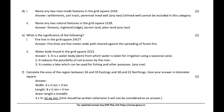What is the significance of the water body found in the grid square 2221? Answer: It is a dam from which water is taken for irrigation using a seasonal canal. It reduces the possibility of soil erosion by the river, and creates a lake which can be used for fishing and other purposes — any one.